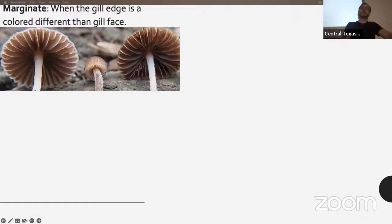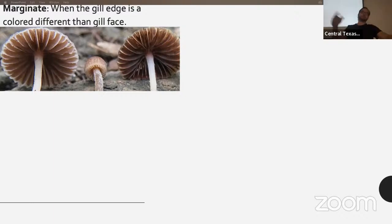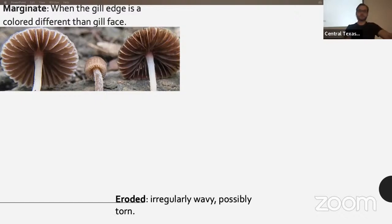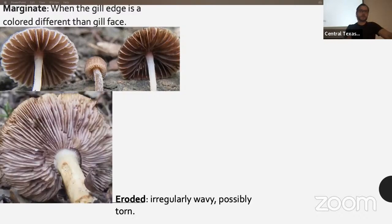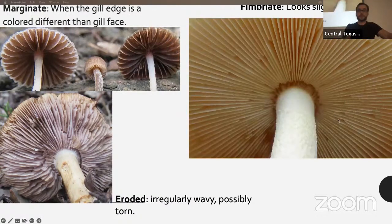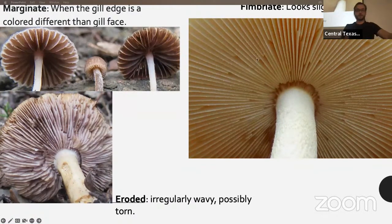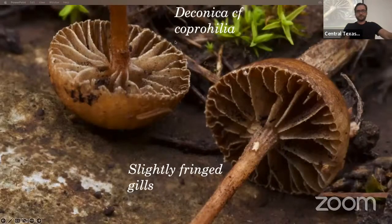When a gill edge is marginate it shows a different color than the side of the gill — the gill face is where all the basidia are, so it gets a color change, and the edge either retains the original gill color or is a different color altogether. Eroded gills are just irregularly wavy, possibly torn. Fimbriate means looking slightly fringed — there's just a little bit of material hanging off — like this Deconica species with a little bit of frill on all the gills.